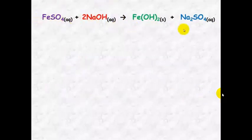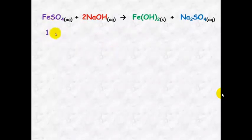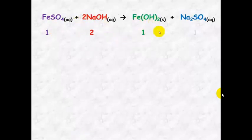Here's a reaction written out for you. It's a balanced chemical equation. We can see here that if we have one mole of iron sulphate, it reacts with two moles of sodium hydroxide to form one mole of iron hydroxide and one mole of sodium sulphate. It will always react in these ratios.